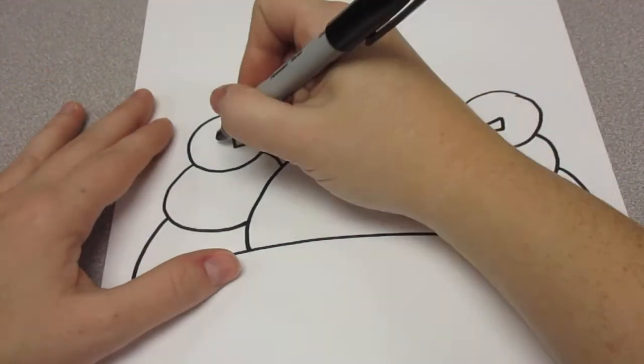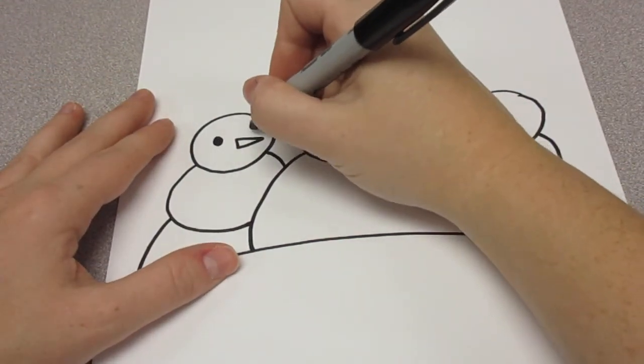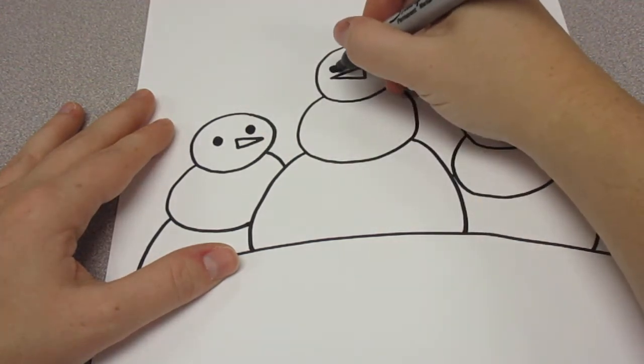Now for the eyes, we're just going to put two black dots on either side of the carrots.